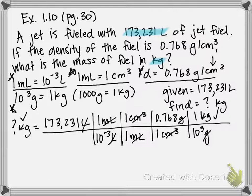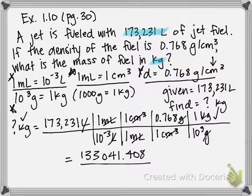So to solve this problem, last thing we need to do is multiply all my numbers on top. So first one times one times one times 0.768 times one should give us 133041.408. And then on the bottom, it's going to be 10 to the negative third times one times one times 10 to the third, which if you type all that into your calculator, 10 to the negative third times 10 to the third, it ends up just giving you one. Remember on top we have our unit of kilogram.